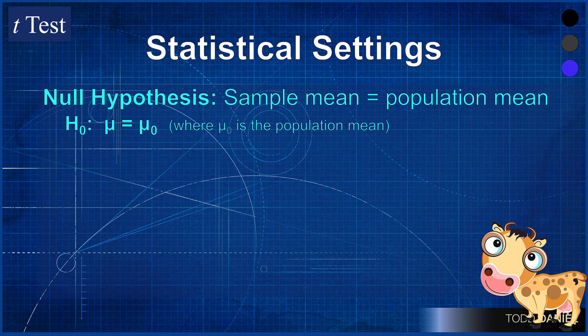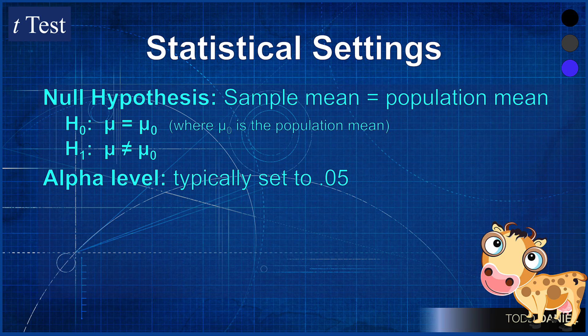The alternative hypothesis would be written as H₁: μ ≠ μ₀, where we will again substitute the actual population mean. The alpha level is typically set to 0.05. However, with a t-test, we have something we did not have with the z-test, the degrees of freedom.